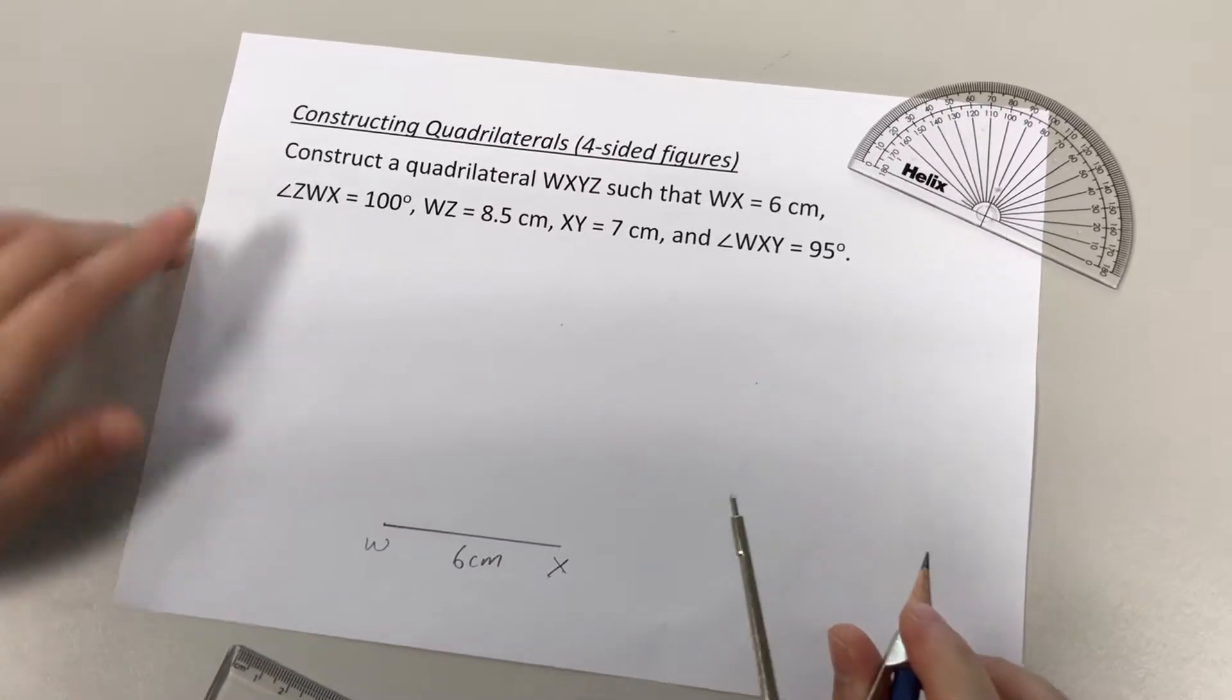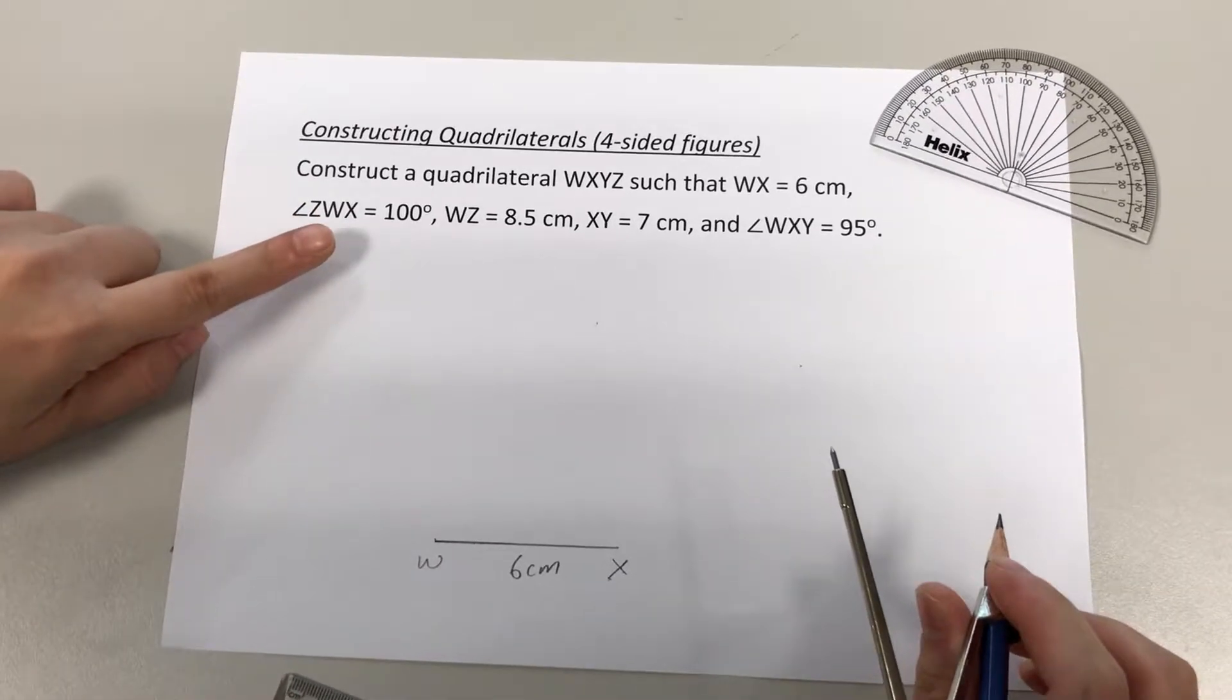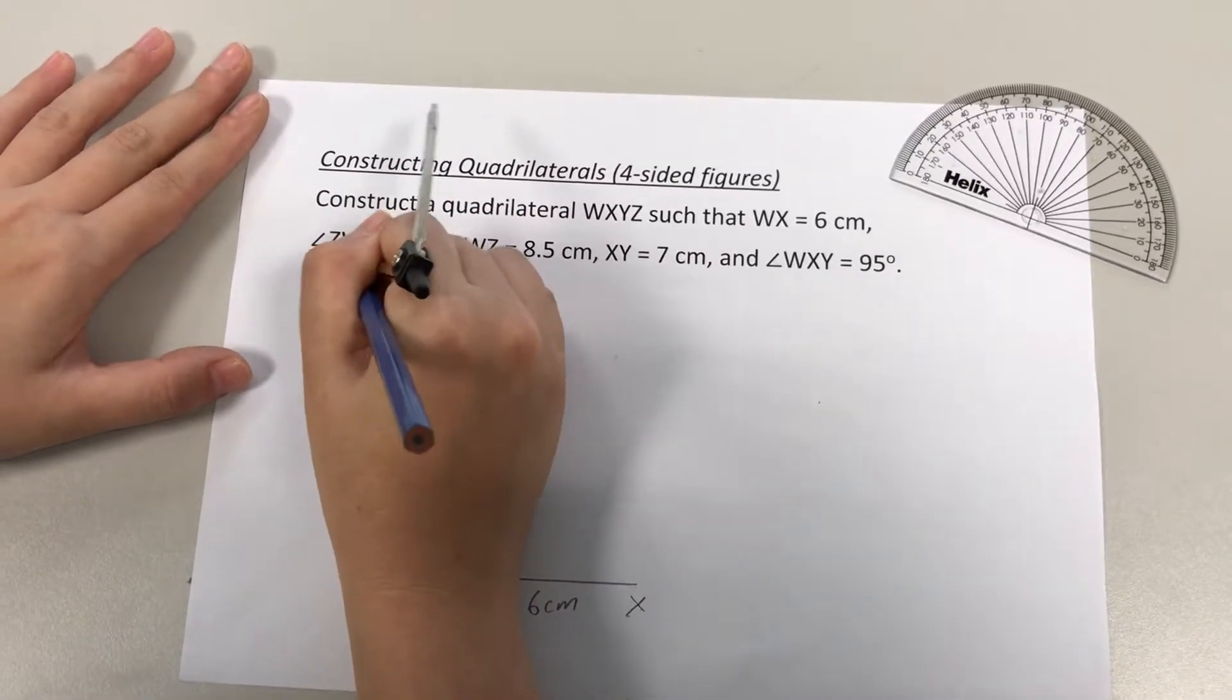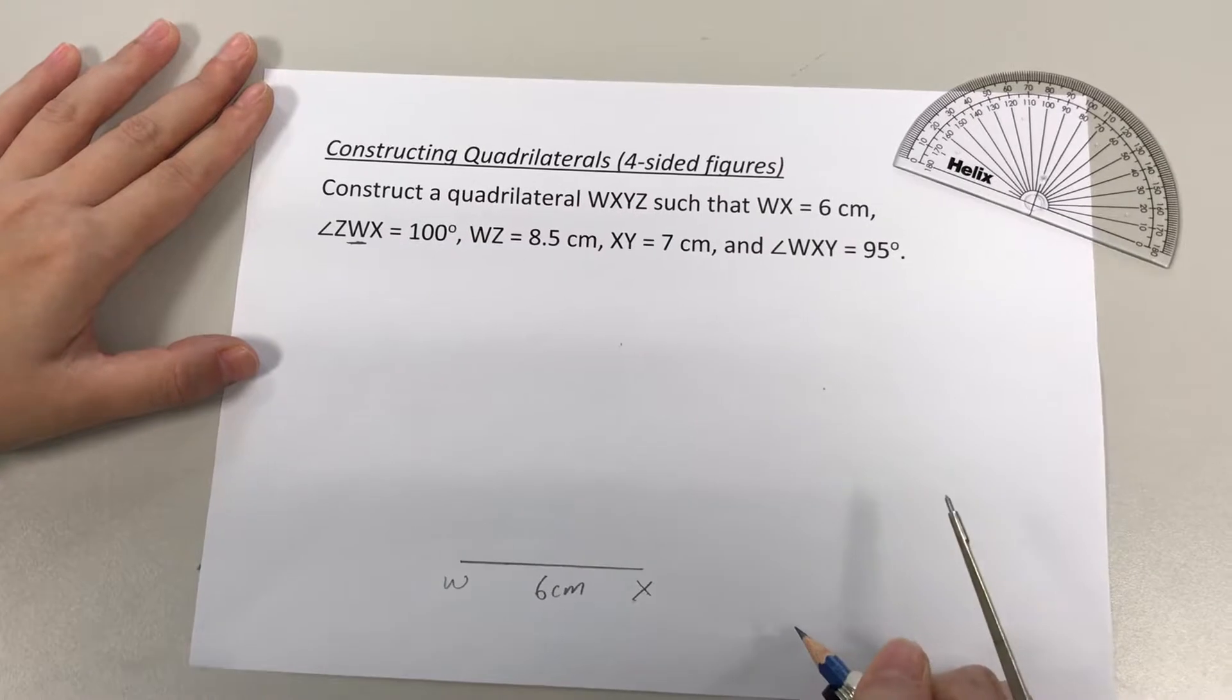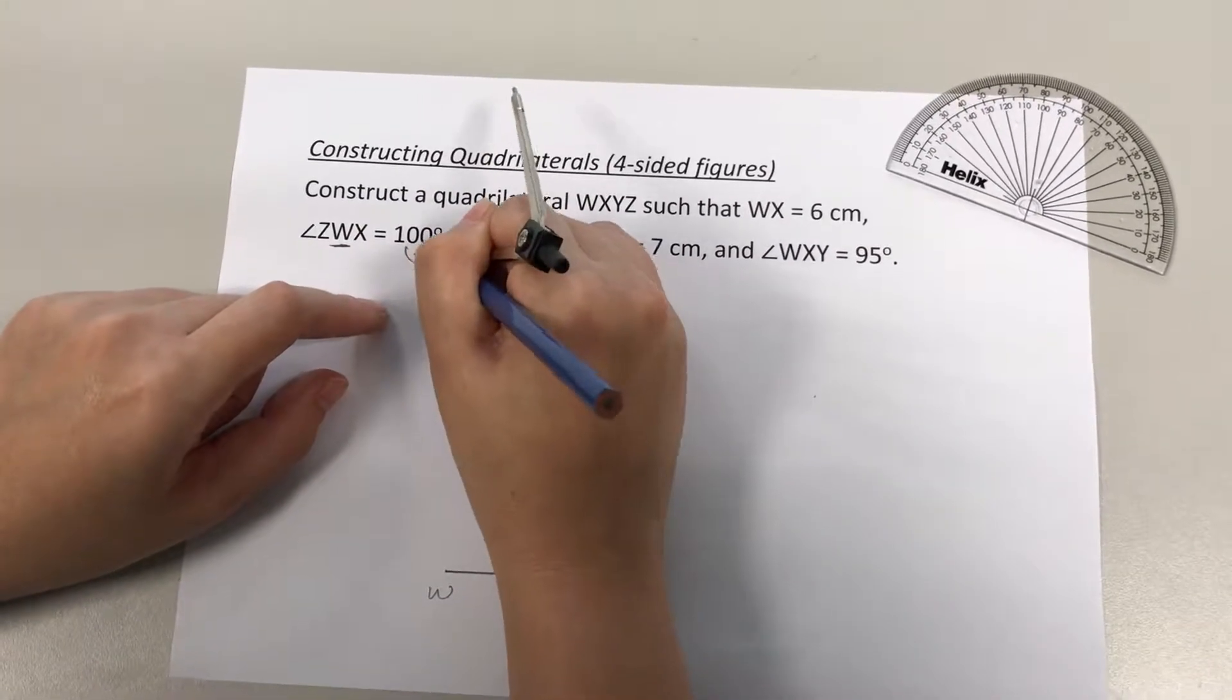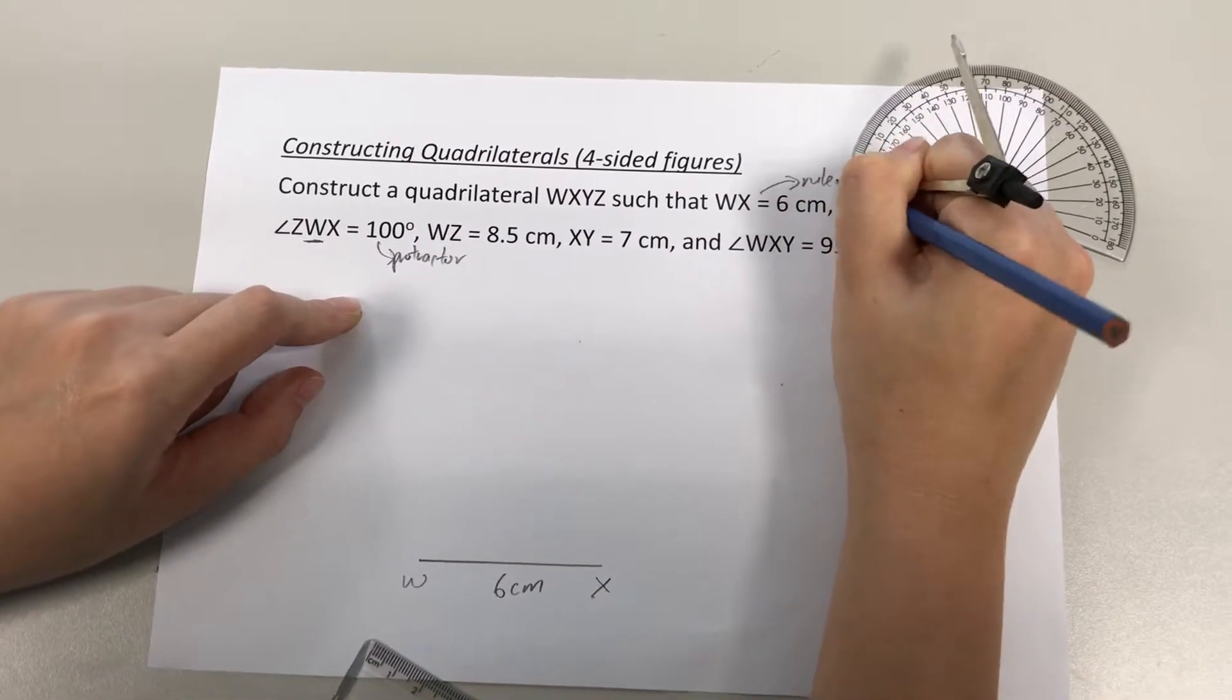Now, next piece of info given: angle ZWX is 100 degrees. So again, when you are given 3 letters to describe an angle, you zoom in to the middle letter. Again, since it is an angle, I'm going to use a protractor to draw it. This was done using a ruler as the first step.